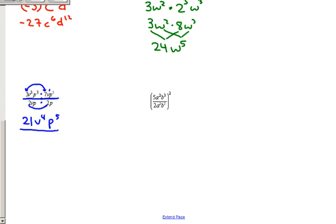p to the third times p to the second is p to the fifth, because we add those. On bottom, 2 times 2 is 4. v, and then p to the 1 times p to the 1 is p to the second.